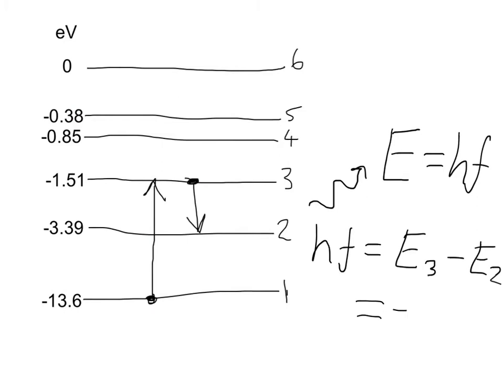So E3 minus 1.51, minus E2 — well, minus a negative number, so plus 3.39. If we plug that into a calculator, we should come up with 1.88 electron volts.